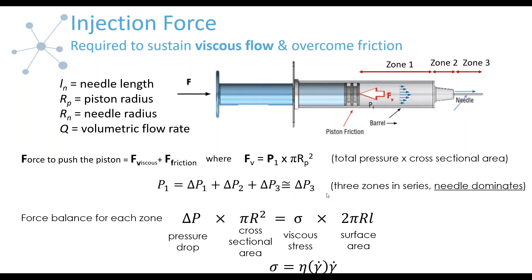Now that we know how to calculate the viscous contribution to the injection force, obviously we'll know the cross-sectional area of the piston. We need to handle what is the pressure drop across the length of the needle. To do this, we look at the force balance in the needle zone: the pressure drop across the needle times the cross-sectional area in the needle is balanced by the viscous force — viscous stress times the wetted area within the needle. The viscous stress is defined as viscosity times shear rate, and this viscosity may or may not be dependent on shear rate. These two equations — the force expression and the stress balance — are what we work with for the Newtonian versus non-Newtonian cases going forward.